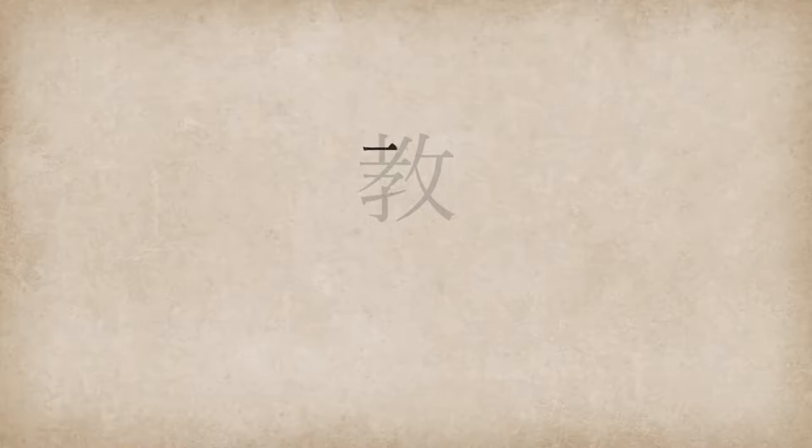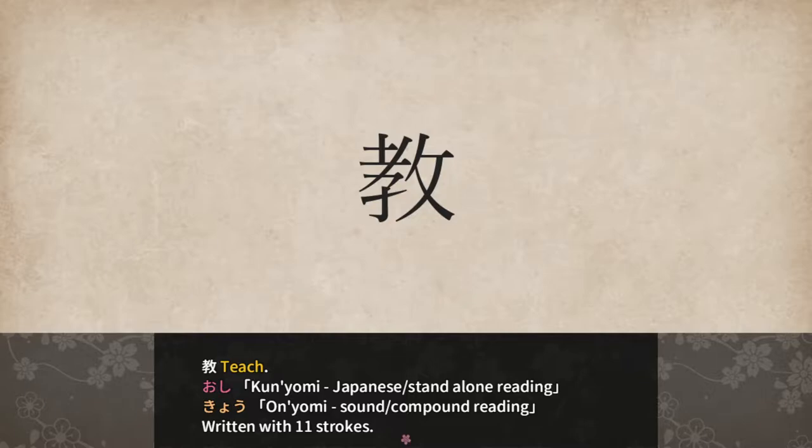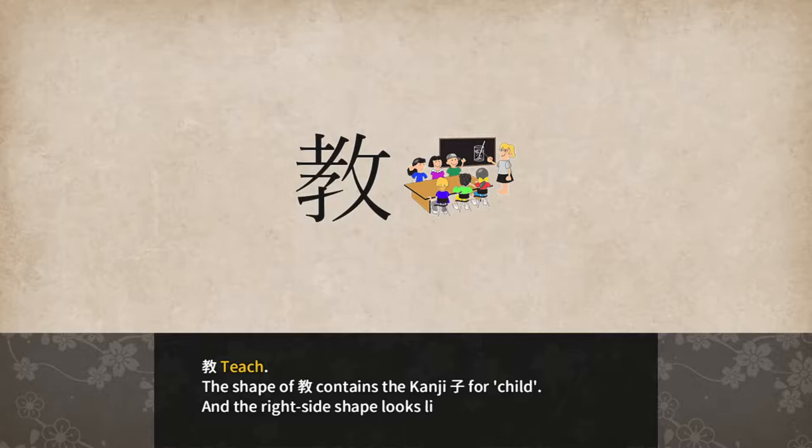Teach. Oshi for kunyomi, or kyo for onyomi, written with 11 strokes. The shape of oshiri contains the kanji ko for child, and the right side shape looks like ona, woman. So you can imagine a lady teaching some children.